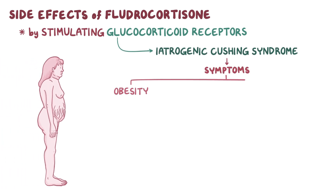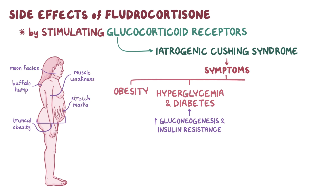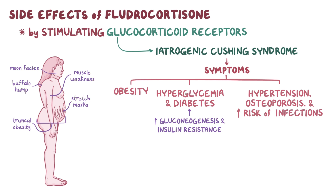Symptoms of Cushing syndrome include obesity, where extra adipose tissue tends to build up between the shoulders — leading to a buffalo hump — in the trunk causing truncal obesity, and in the face causing moon face. Hyperglycemia and diabetes often result from increased gluconeogenesis and insulin resistance. Muscle weakness and skin stretch marks can occur due to protein breakdown. Hypertension, osteoporosis, and increased risk of bacterial and fungal infections are also common problems caused by excessive cortisol.